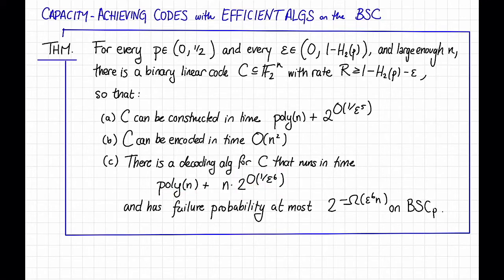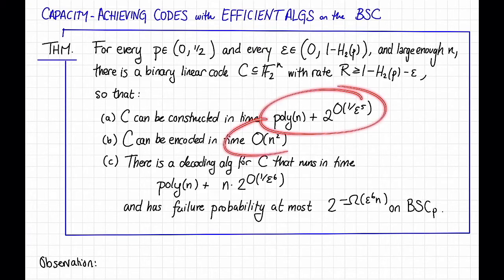Moreover, this decoding algorithm has failure probability exponentially small in n on the binary symmetric channel with parameter p. So an observation here is that everything is polynomial time as long as epsilon is a constant.